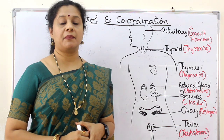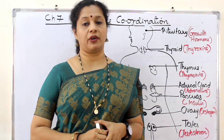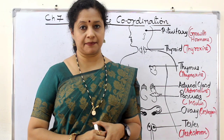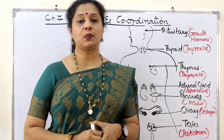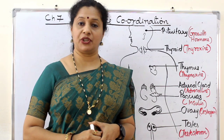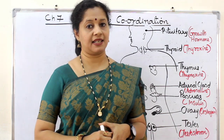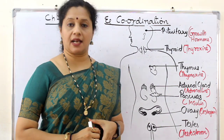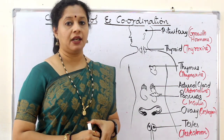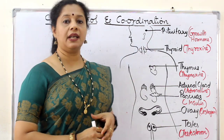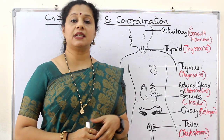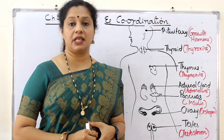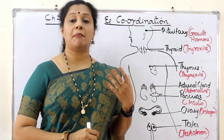The endocrine system is the second means of controlling our body by means of hormones, which are chemicals. The glands which secrete hormones are called endocrine glands. We are learning a few endocrine glands in our body, starting from the pituitary, which is located just below the hypothalamus and is known as the master gland.